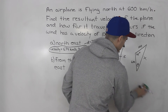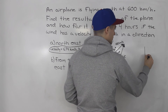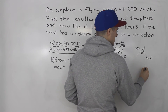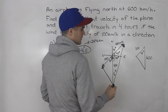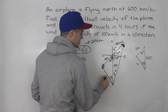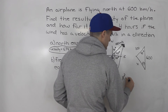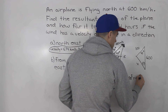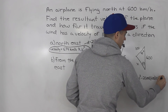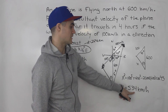Drawing the triangle out to see it clearly: we have 600 for the plane, 100 for the wind coming down, and the angle is 45 degrees. We're solving for the unknown side x and the direction theta. Using the cosine law: x squared equals 100 squared plus 600 squared minus 2 times 100 times 600 times cosine of 45 degrees. When you do that calculation, you get 534. That x is a speed, so it is 534 kilometers per hour.